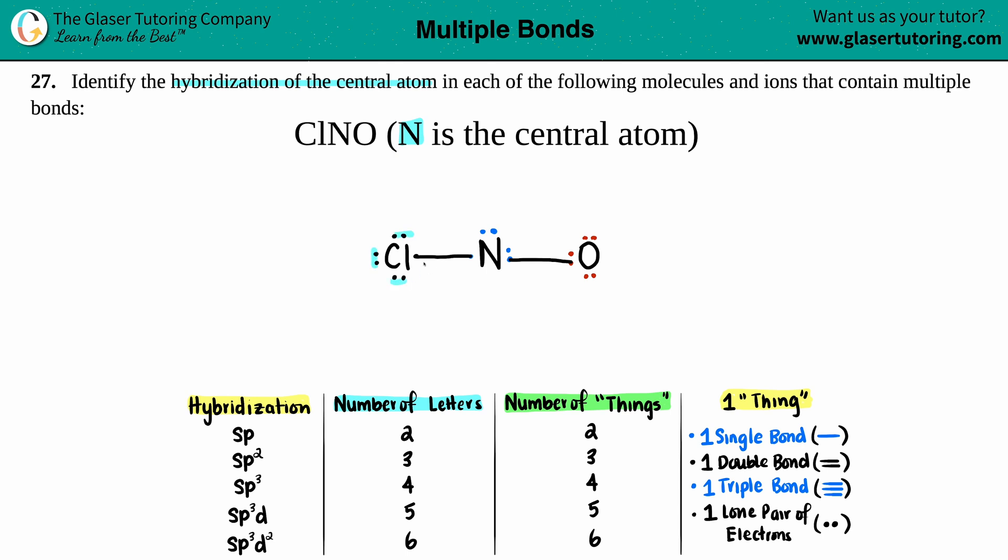Now we'll check for octet. This chlorine already has the octet - 2, 4, 6, 8 electrons, so this single bond is good. But the oxygen has 2, 4, 6, 7 valence electrons. It wants one more, so that's where the double bond comes in.